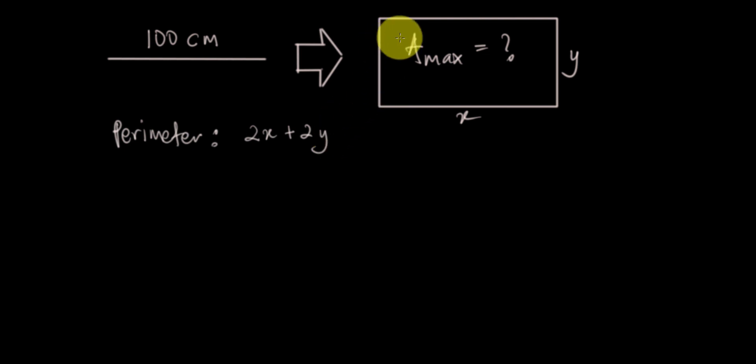The total length is equal to 100. You divide by 2, you get x plus y equal to 50. So y is equal to 50 minus x. Let's say this is equation number one.